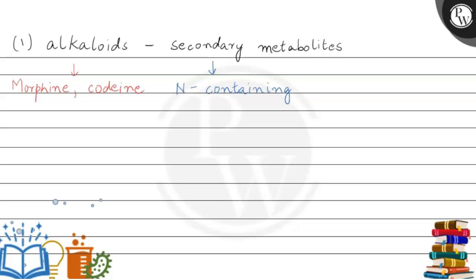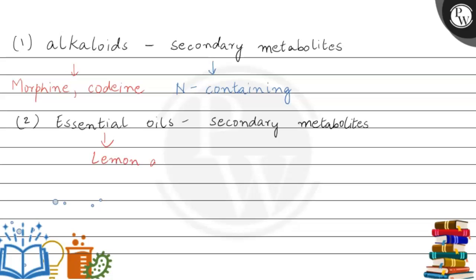The second option says essential oils. Essential oils are secondary metabolites which are released by several plants. A major type is lemongrass oil, which is also the most common type used commercially.